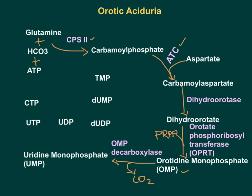UMP synthase is a bifunctional enzyme — it has both OMP decarboxylase and orotate phosphoribosyltransferase activities. Once you get UMP, it can be converted into UDP and then into UTP, and UTP can be converted to CTP by CTP synthase enzyme.